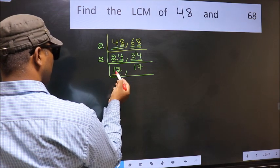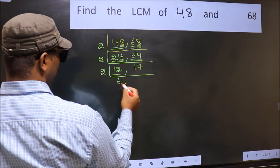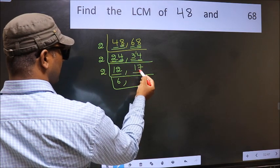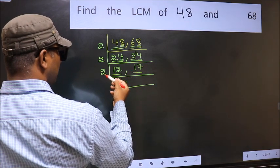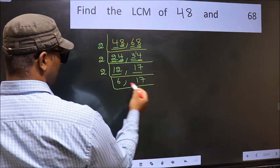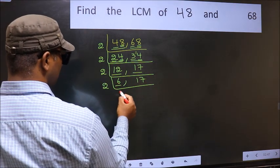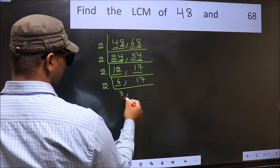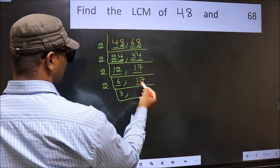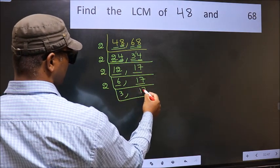Now here we have 12. 12 divided by 2 gives 6, since 2 times 6 is 12. The other number 17 is not divisible by 2, so we write it down as it is. Now here we have 6 — 2 times 3 is 6. The other number 17 is still not divisible by 2, so we write it down as it is.